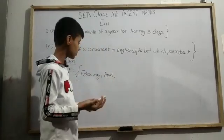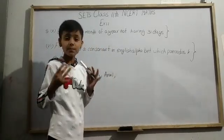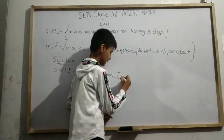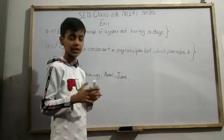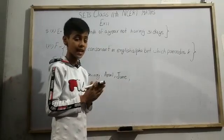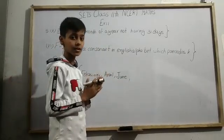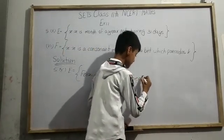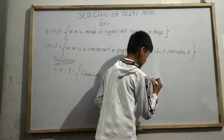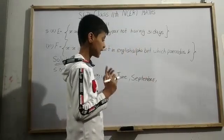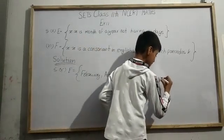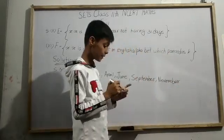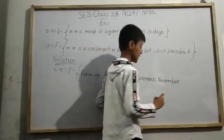May has 31 days, so we skip it. June does not have 31 days, so we write June. July has 31 days, so we skip it. September does not have 31 days, so we include September. October has 31 days, so we skip it. November does not have 31 days, so we include November.